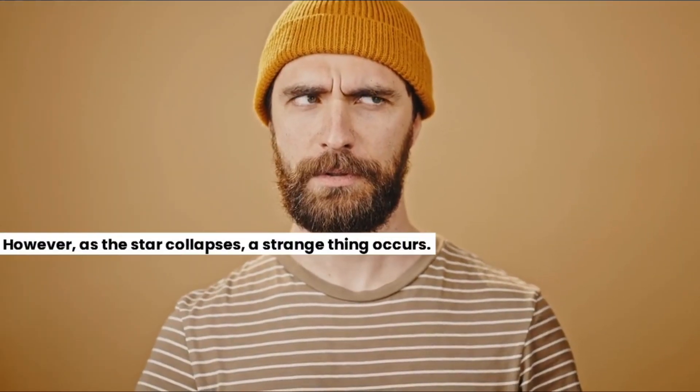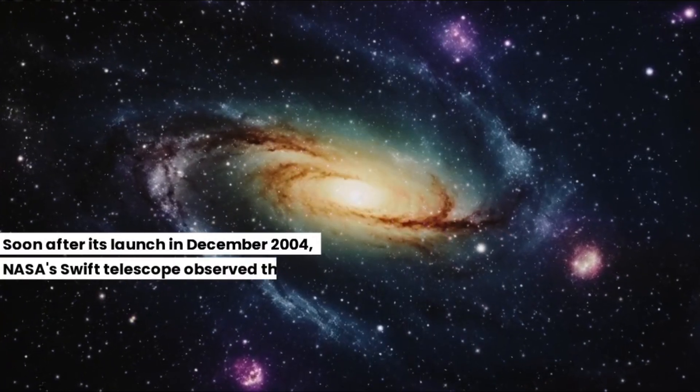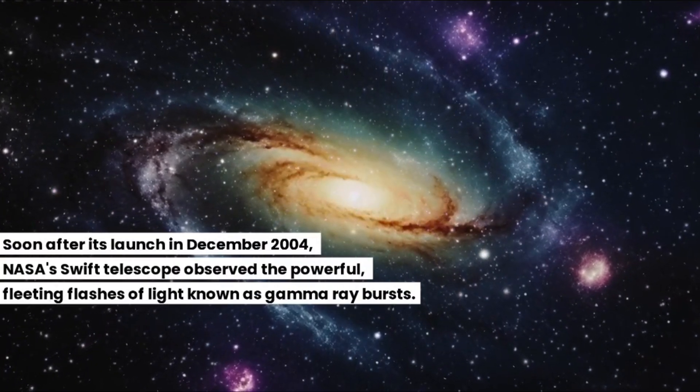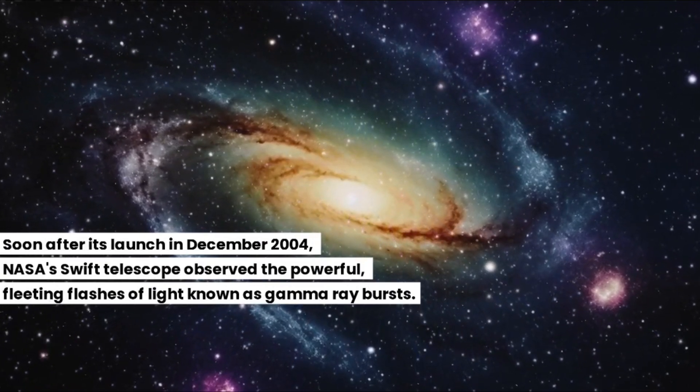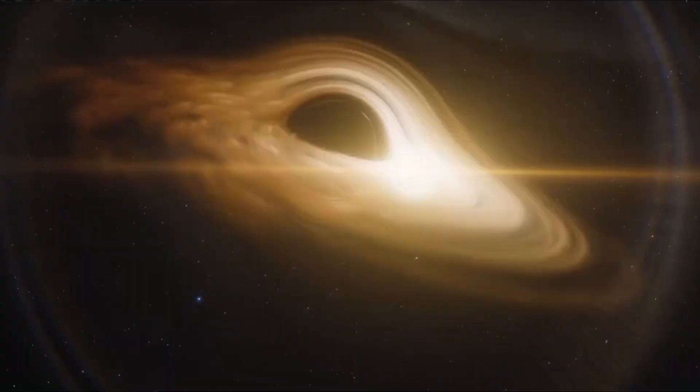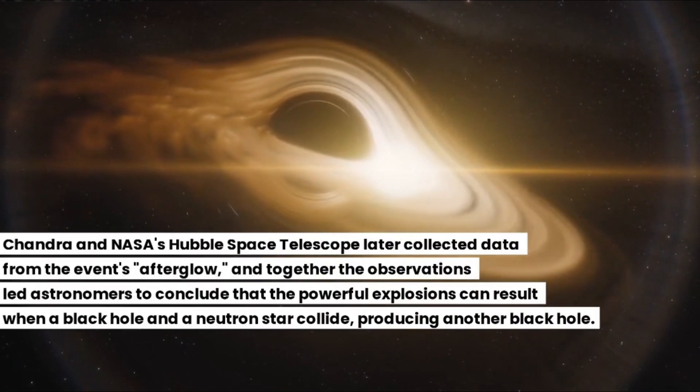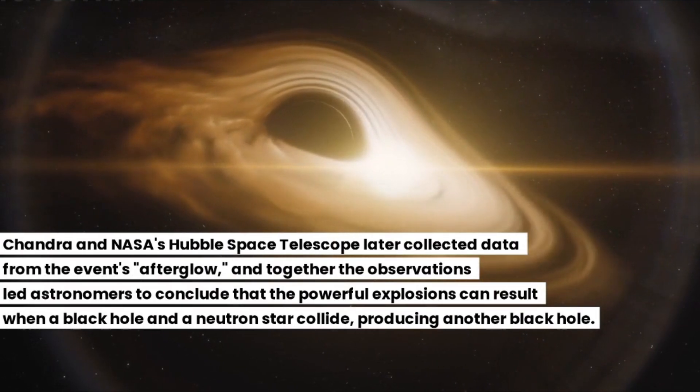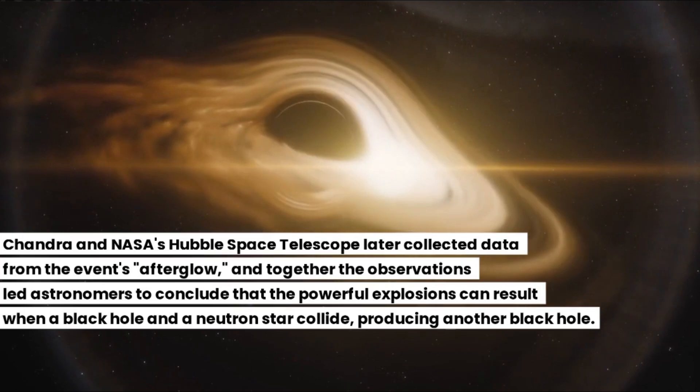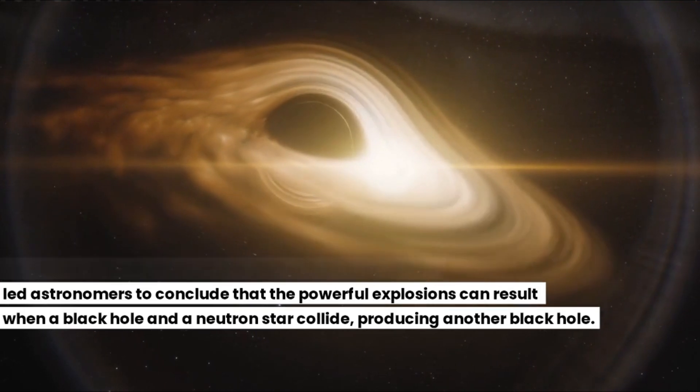However, as the star collapses, a strange thing occurs. Soon after its launch in December 2004, NASA's Swift telescope observed the powerful, fleeting flashes of light known as gamma-ray bursts. Chandra and NASA's Hubble Space Telescope later collected data from the event's afterglow. And together the observations led astronomers to conclude that the powerful explosions can result when a black hole and a neutron star collide, producing another black hole.